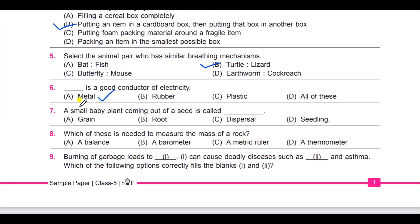Question number seven: a small baby plant coming out of a seed is called dash. Option A: grain, B: root, C: dispersal, D: seedling. Of course, the answer is D: seedling.